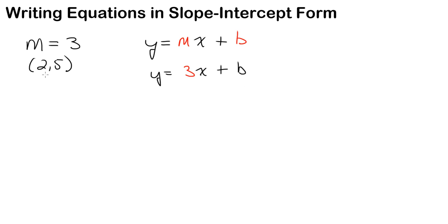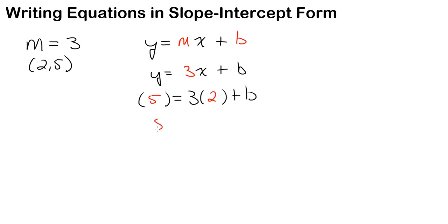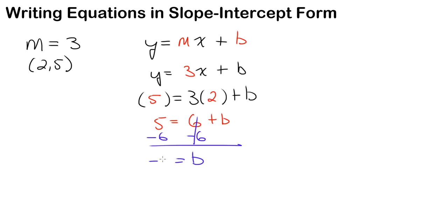Remember, whenever you substitute for a variable, you want to use parentheses — that way you make sure you don't make any mistakes. So I have y equals 3x plus b, and I just need to plug in my x and my y. My y value is 5 and my x value is 2. So I have 5 equals 3 times 2, which is 6, plus b. Now I need to subtract 6 from both sides, and I find that b is negative 1.